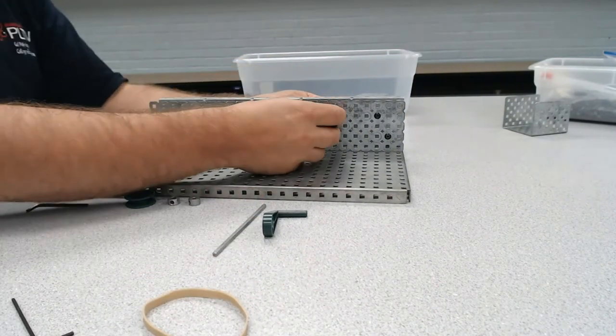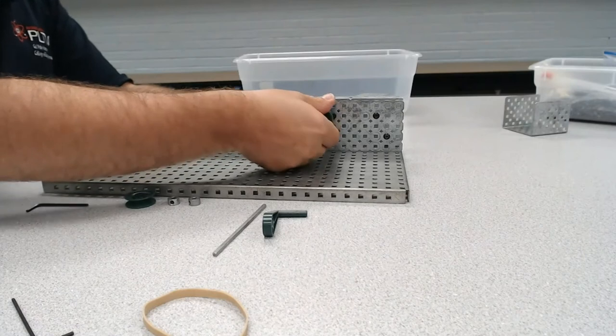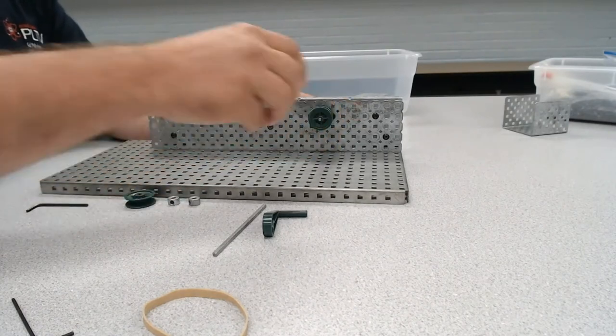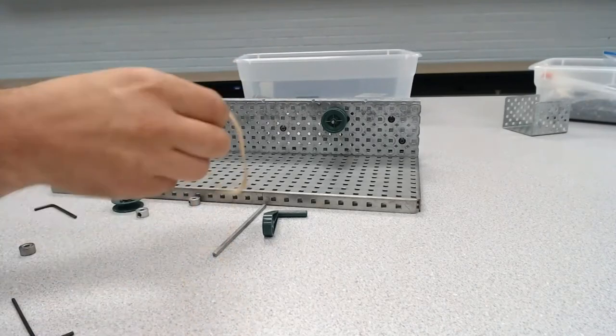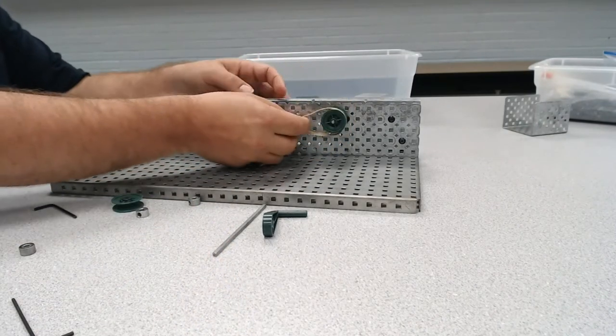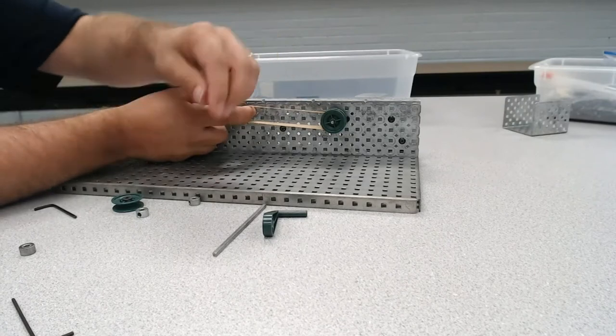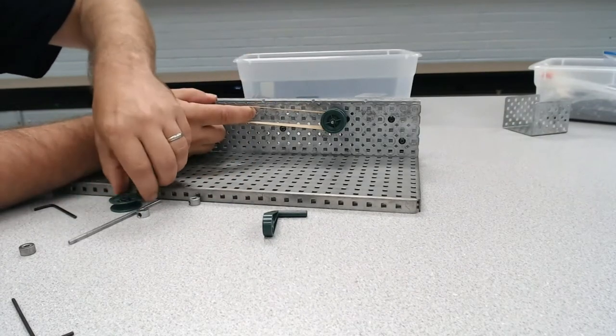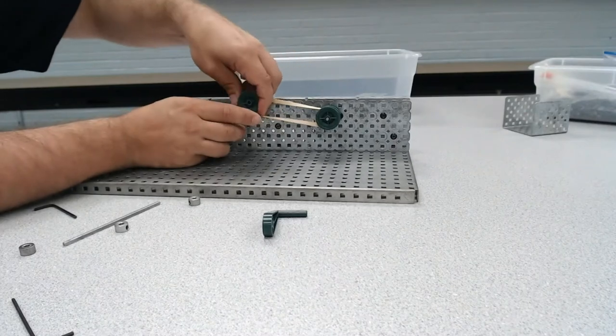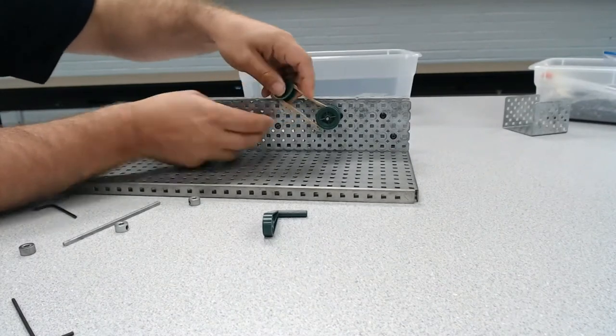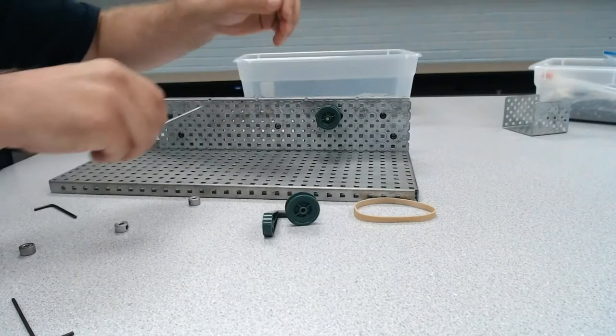So I'm going to take one of these pulleys and I'm just going to slot this onto the drive shaft. Now I need to do that first because I want to figure out the position for where I'm going to hold this. So what I'm going to do is I'm going to kind of pull this a bit tight. I'm going to put the other pulley on this and I'm going to use this to mark the opening. So I'm actually going to use this opening here.